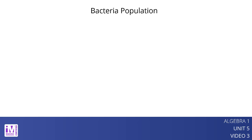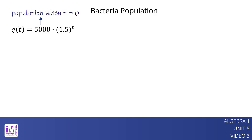An exponential function can give us information about a graph that represents it. For example, suppose the function q represents a bacteria population t hours after it is first measured, and q of t equals 5,000 times 1.5 to the t. The number 5,000 is the bacteria population when t is 0. The number 1.5 indicates that each hour the bacteria population increases by a factor of 1.5.